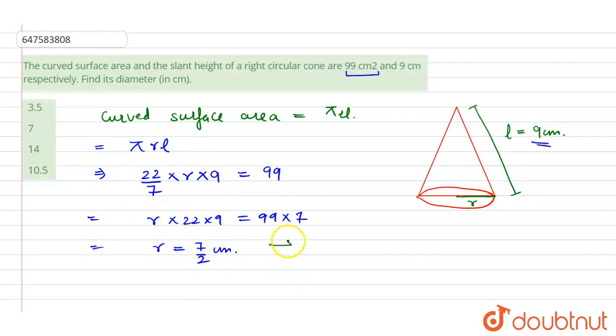Now, we have to find the diameter. We all know that diameter equals radius times 2. So, radius is 7/2 × 2. 2 and 2 cancel out.